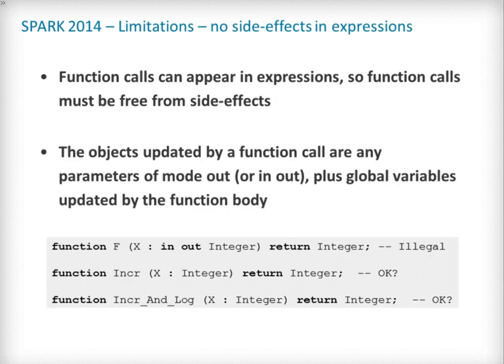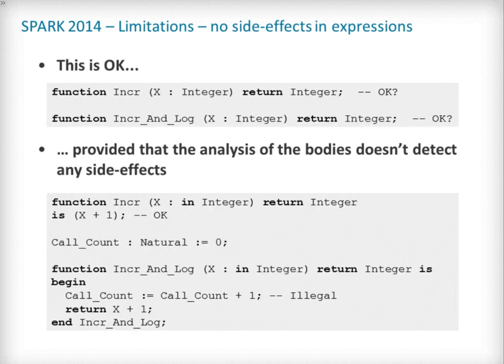To aid in the static verification of expressions, and because function calls are themselves expressions, they must also be freed of side effects. Potential side effects of a function include updates to its parameters and global variables. As a consequence, Spark forbids subprograms that are functions with out or in-out parameters, like the function F shown here, as well as functions updating global variables. In most cases, these functions can easily be replaced by procedures.